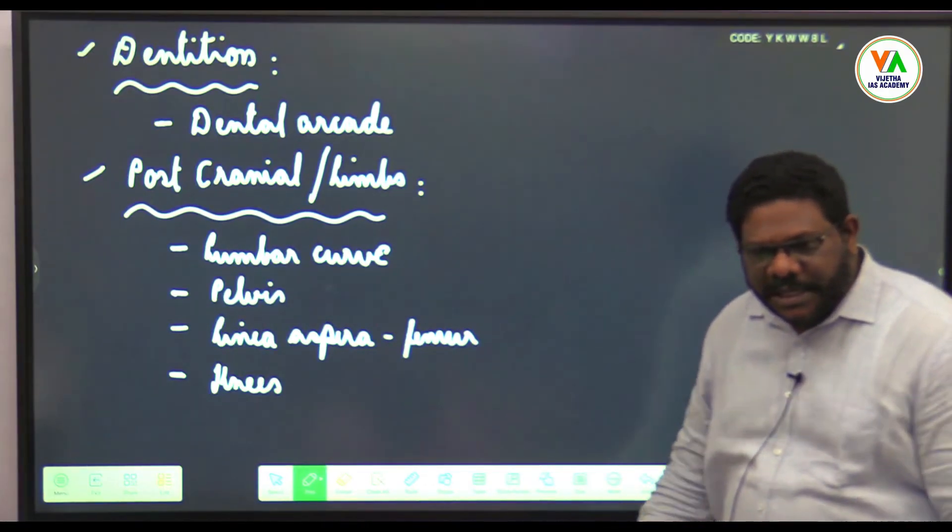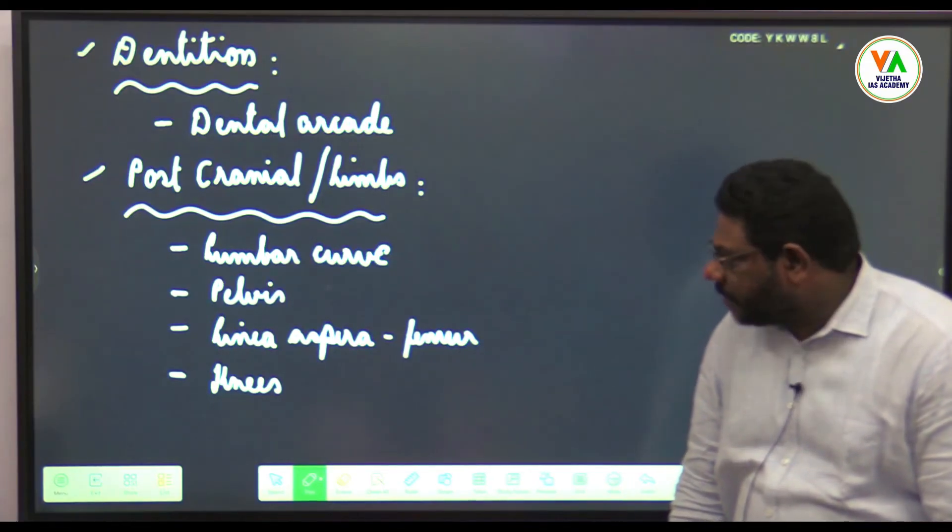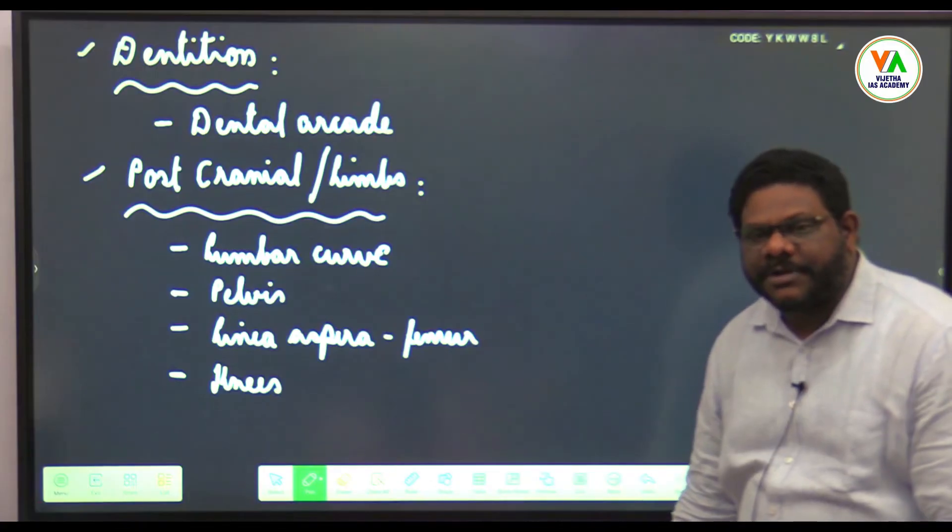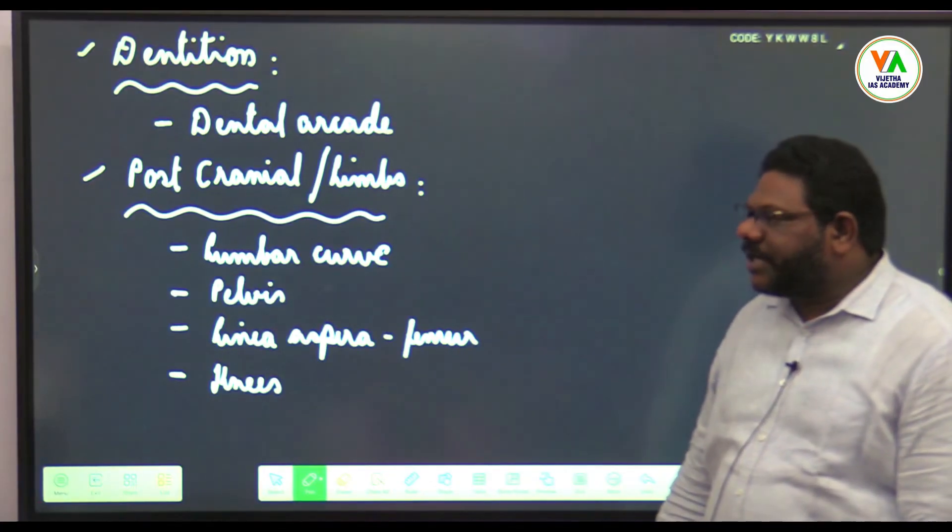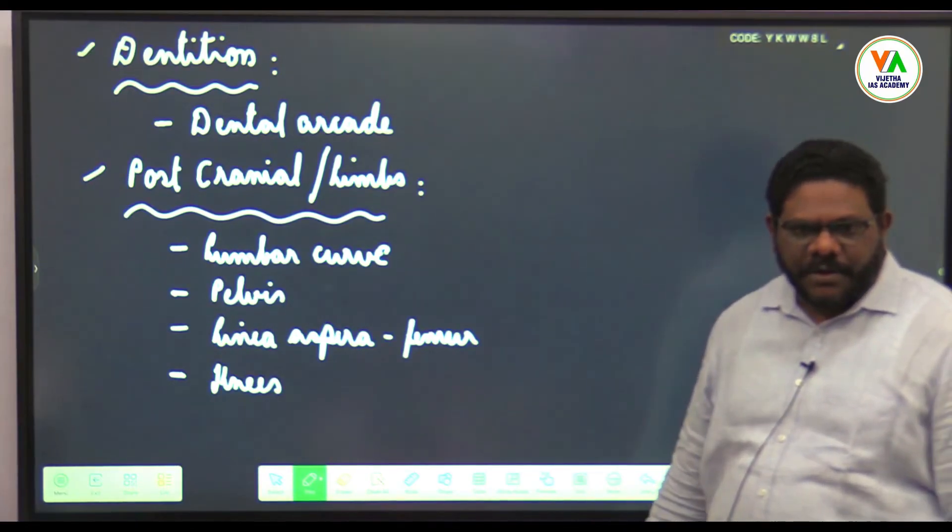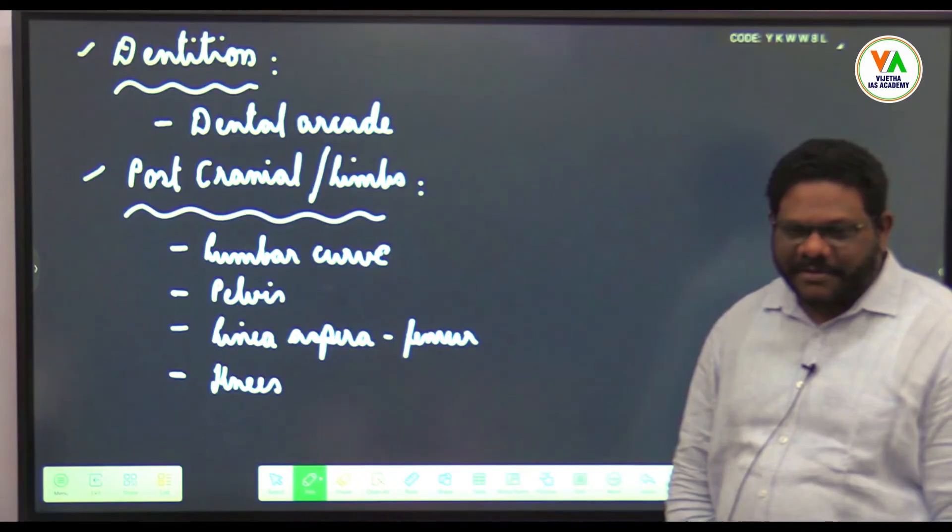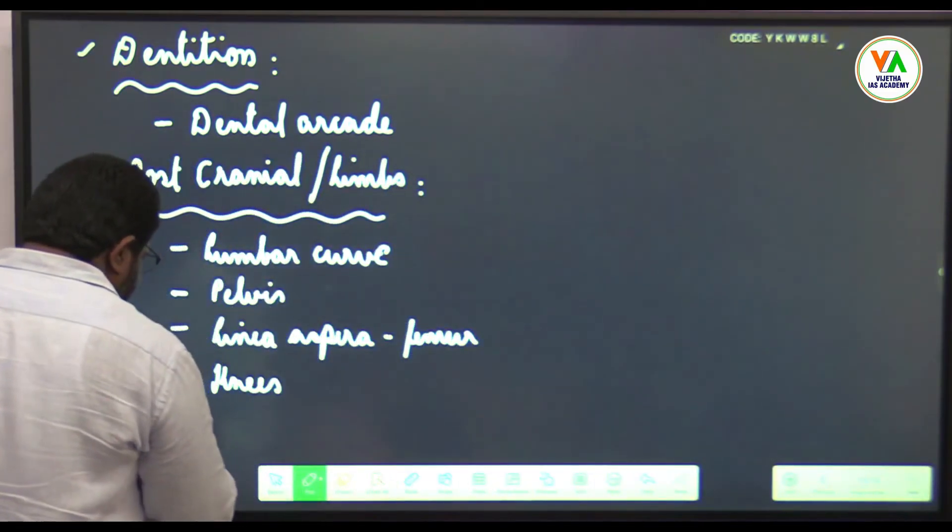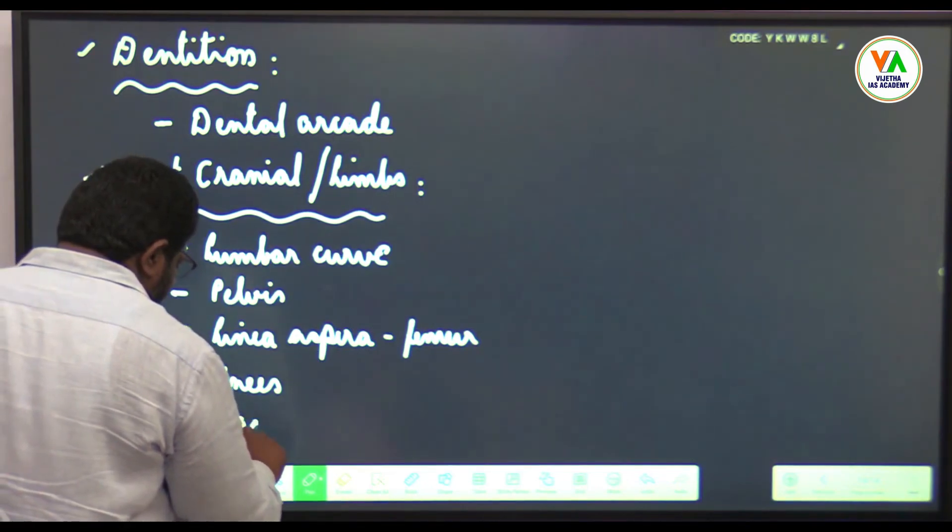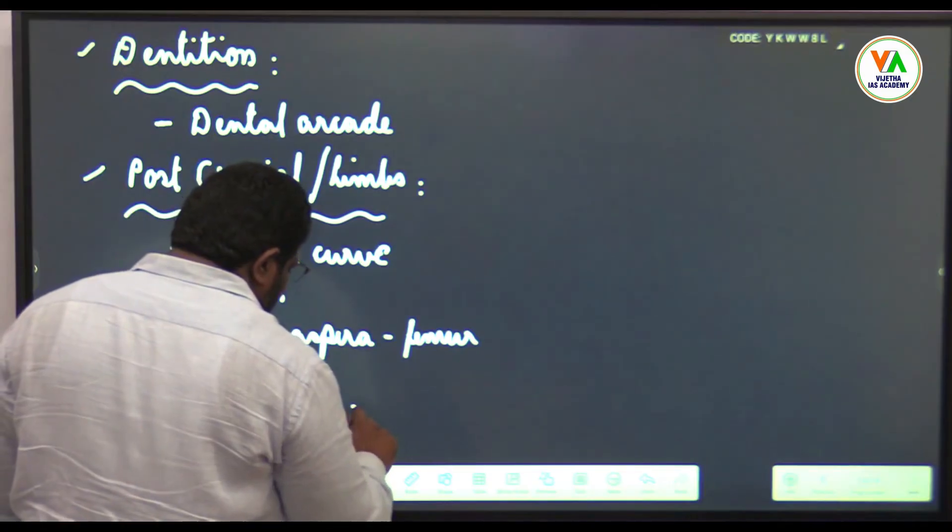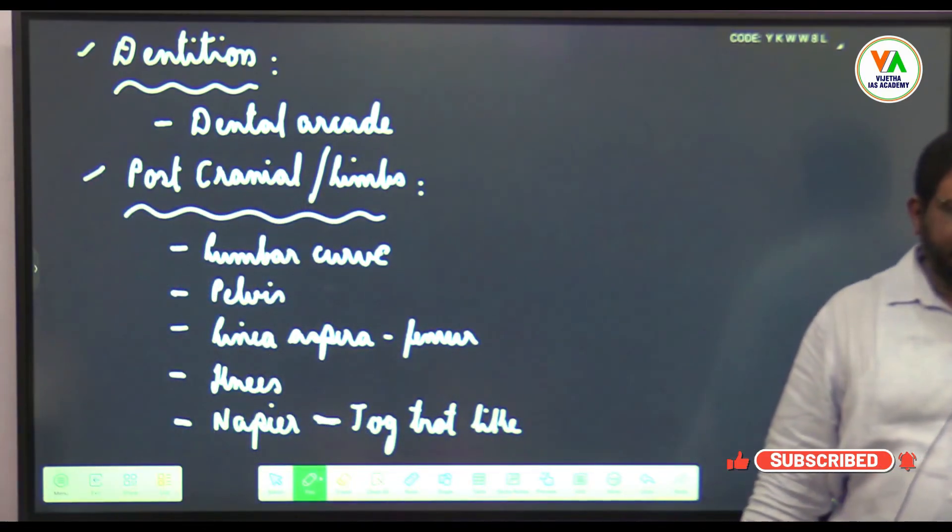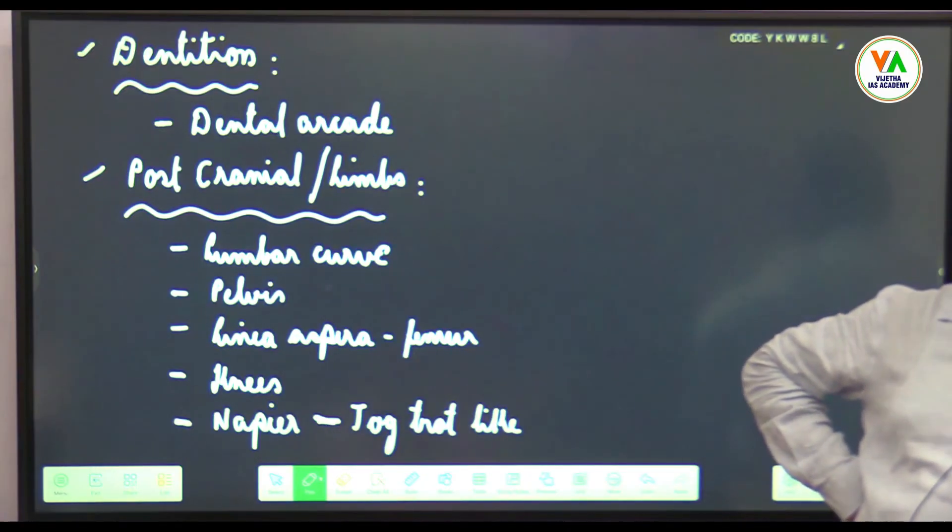With these features—lumbar curve, broad pelvis, linea aspera indicating thigh muscles are better developed along with buttock muscles, and slight straightening of knees—this posture produces a type of movement known as jog-trot like locomotion. According to Napier, Australopithecus had jog-trot like locomotion. All the above features suited for this.